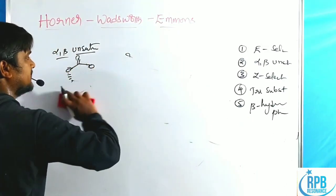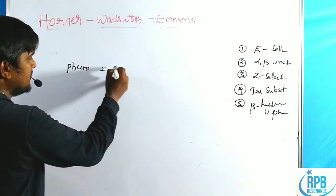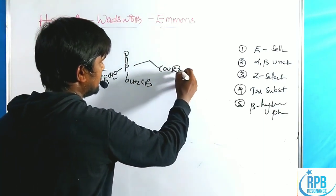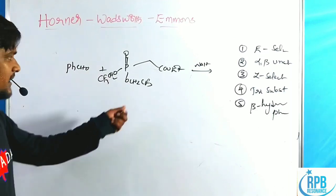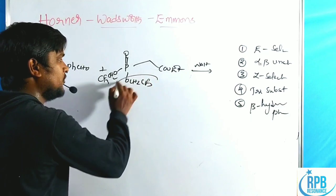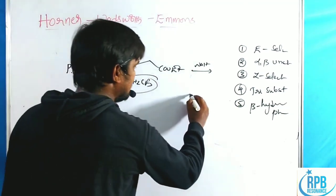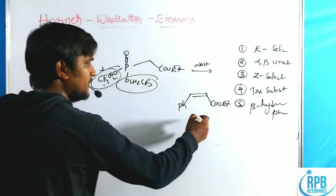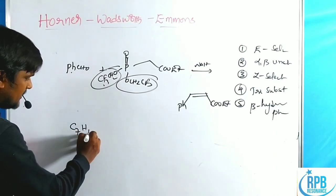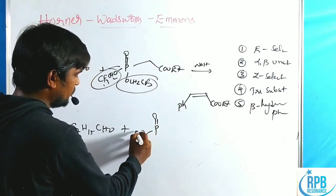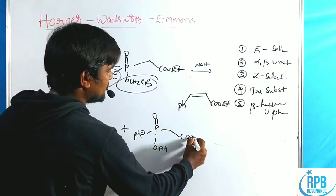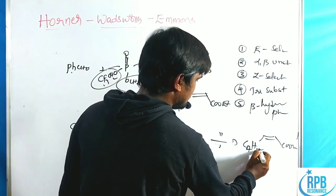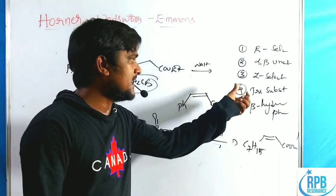Category 3 — Z selectivity. Benzaldehyde is treated with a trifluoroethyl phosphonate (OCH2CF3) bearing a COOEt group in the presence of sodium hydride. With trifluoroethyl phosphonate, we get the Z isomer as the major product with 50:1 Z stereoselectivity. Similarly, using aryl phosphonates with C7H15-COOEt also gives Z product as major. In both cases, Z is the major product.